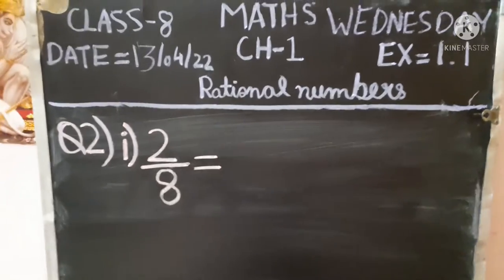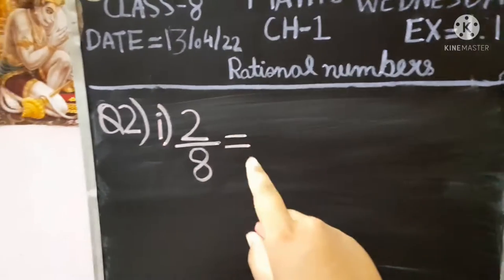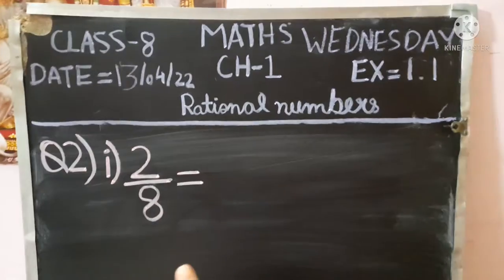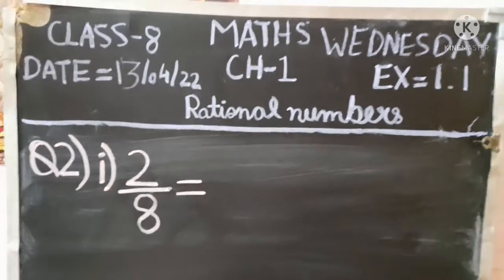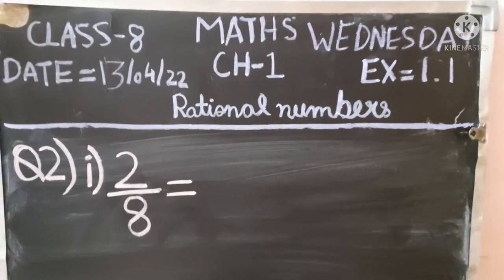Let me show you in example form. This is our Question 2, first part: 2 upon 8, and we have to find the additive inverse of it.